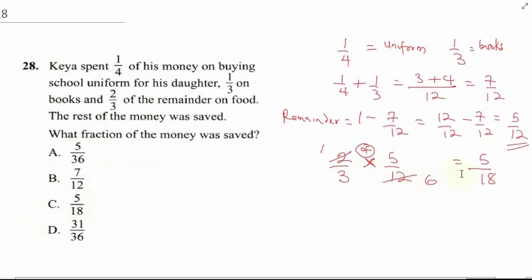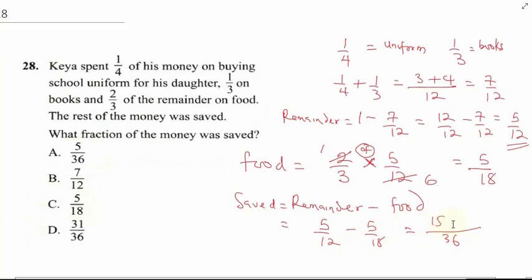What fraction of the money was saved? This 5/18 is what was spent on food. What will be saved will be remainder minus food, which is 5/12 minus 5/18. The LCM here is 36. 36 into 12 gives us 3, times 5 is 15, minus 36 divided by 18 is 2, times 5 is 10. This gives us 5/36, and that's our final answer. The correct answer is A.